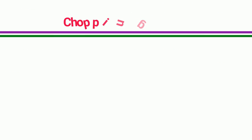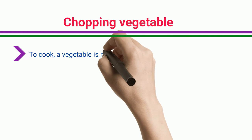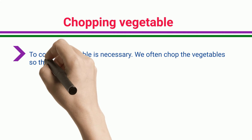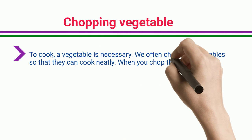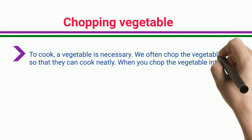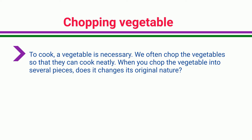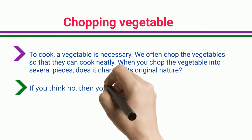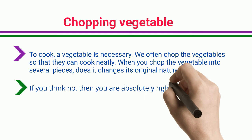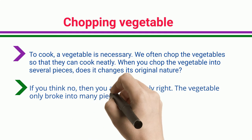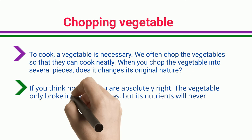Chopping vegetables: to cook a vegetable, we often chop the vegetables so that they can cook neatly. When you chop the vegetable into several pieces, it does not change its original nature. The vegetable only breaks into many pieces, but its nutrients never change.